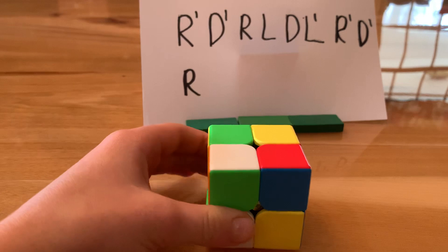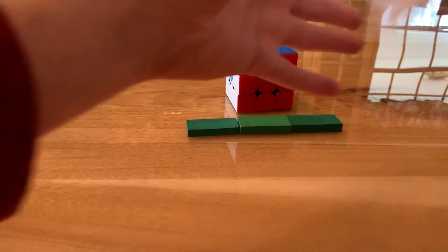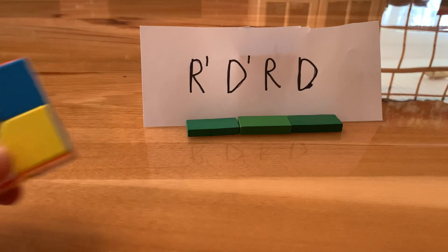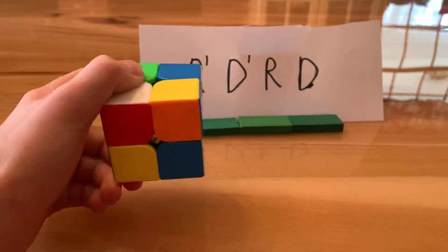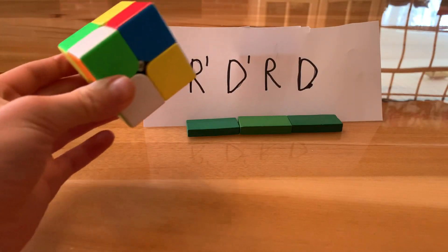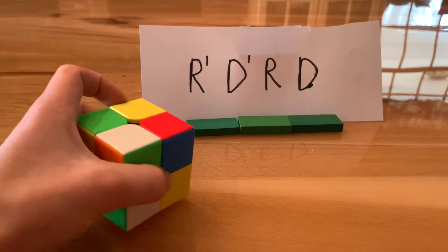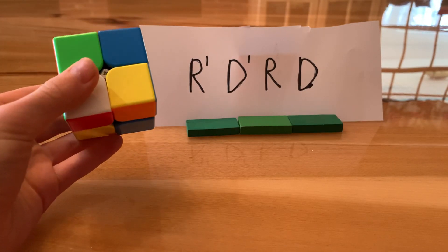So first we need to go over what in the background is standard notation, which is basically letters that represent moves on the cube. R stands for right, D is down, L is left, U is up, B is back, and F is front. Basically just what you think.